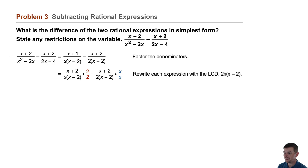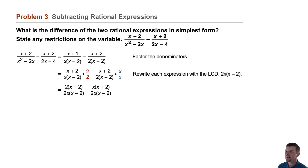On the left, we get 2 times x plus 2 over 2x times x minus 2. On the right, being subtracted from the rational expression on the left, x times x plus 2 over the common denominator, 2x times x minus 2.